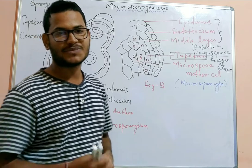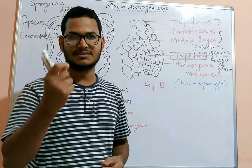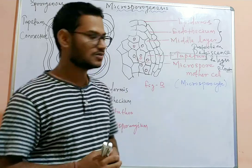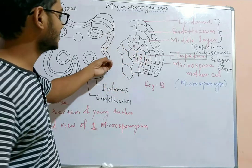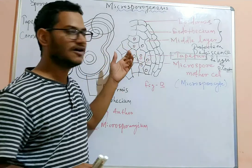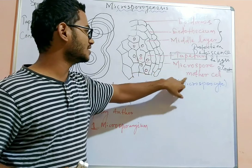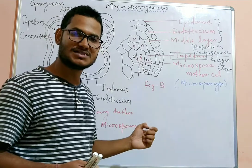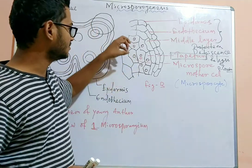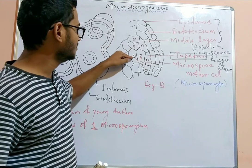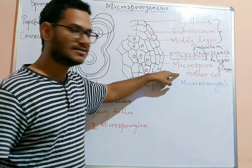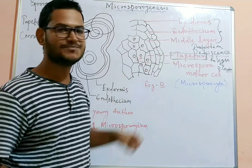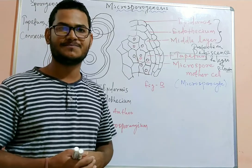The tapetum provides essential nutrients to the growing pollen grain. The cells of the tapetum have dense cytoplasm and more than one nucleus. The microspore mother cell or microsporocyte develops into a pollen grain by meiotic division. This growth is carried out with nutrient supply from the tapetum, the innermost layer.